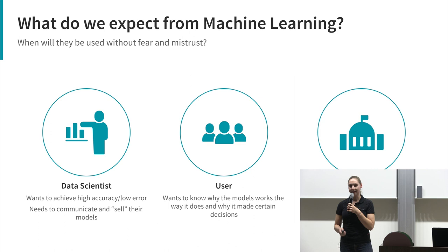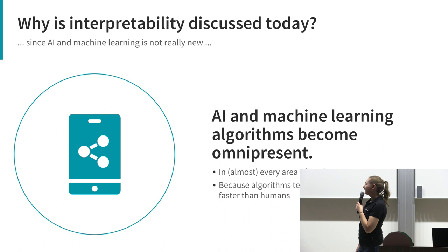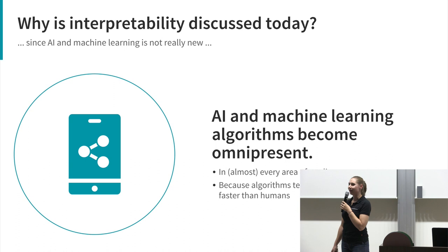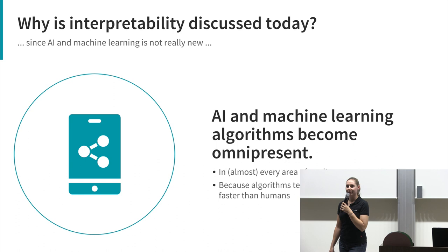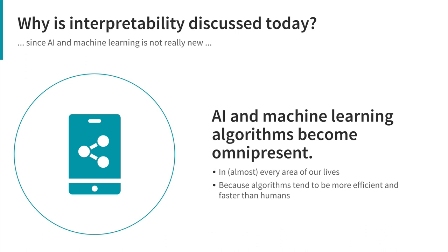Why is interpretability being discussed? AI and machine learning algorithms are almost everywhere nowadays — in lots of our apps, deciding which emails are spam, suggesting replies. AI is becoming omnipresent, and because they are so efficient in many tasks, machine learning algorithms tend to be more efficient than humans who can do the same thing but with lower accuracy.